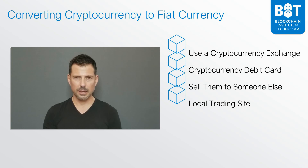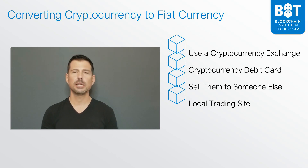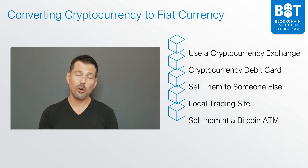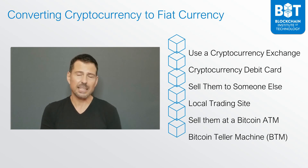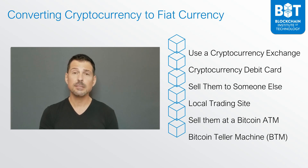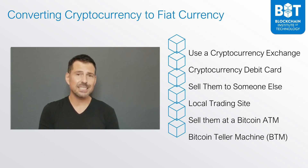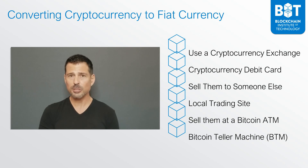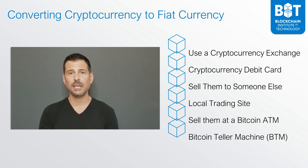Another option is to use a Bitcoin ATM. These are also called BTMs, or Bitcoin Teller Machines. You go to one of these teller machines and you can buy Bitcoins from them, but you can also sell Bitcoins at many of them. It's a very easy transaction where you process the sale of your Bitcoins, transfer them using your own wallet into the teller machine, and the teller machine issues you local fiat currency.